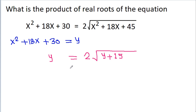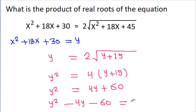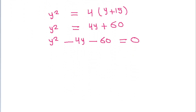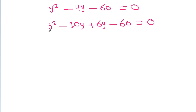If we square both sides, we get y² = 4(y + 15), which gives y² = 4y + 60. So y² - 4y - 60 = 0, which factors as y² - 10y + 6y - 60 = 0.